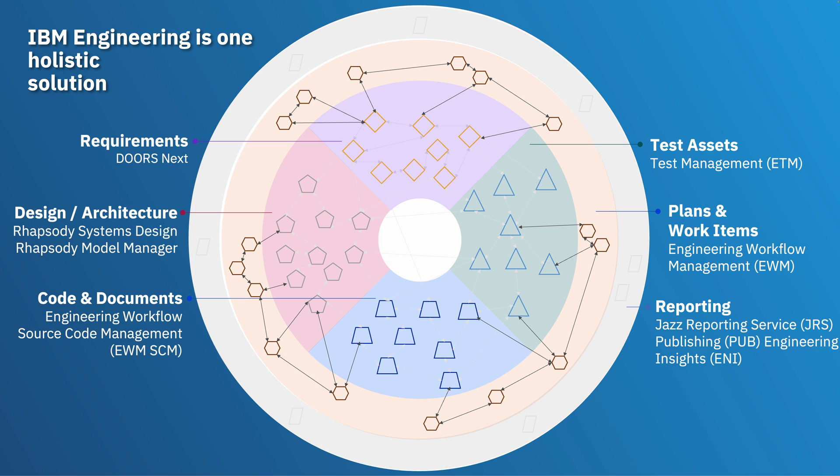You can imagine this platform as a set of applications that can help you in all areas. For Requirements Management, we have the Engineering Requirements Management Doors Next application. For Design and Architecture, we have IBM Engineering Systems Design Rhapsody. For source code, documents, work items, and plans management, there is Engineering Workflow Management. For managing test cases, test assets, and test plans, we have Engineering Test Management. For Reporting, we have Jazz Reporting Service — the Report Builder — where you can create table or graph-style reports. Then there is Optimization Publishing for document-style templates used in Doors Next, and finally Engineering Insights, which displays data and traceability as diagrams rather than tables or graphs.